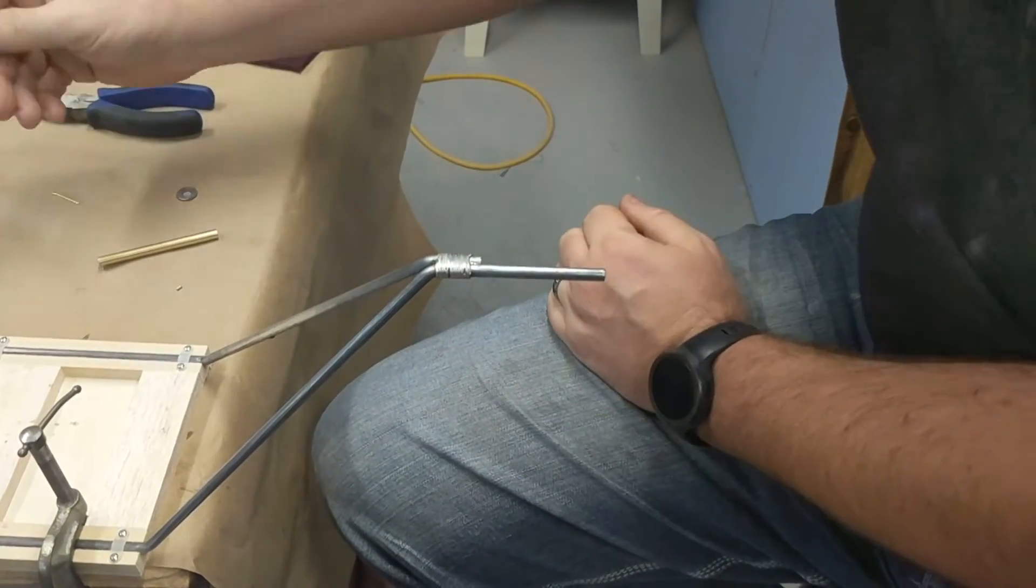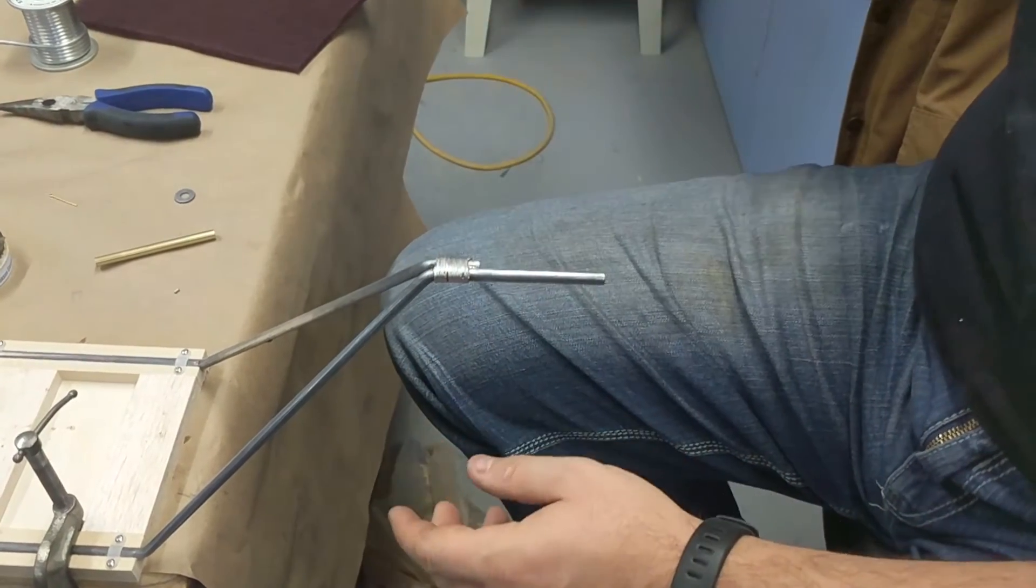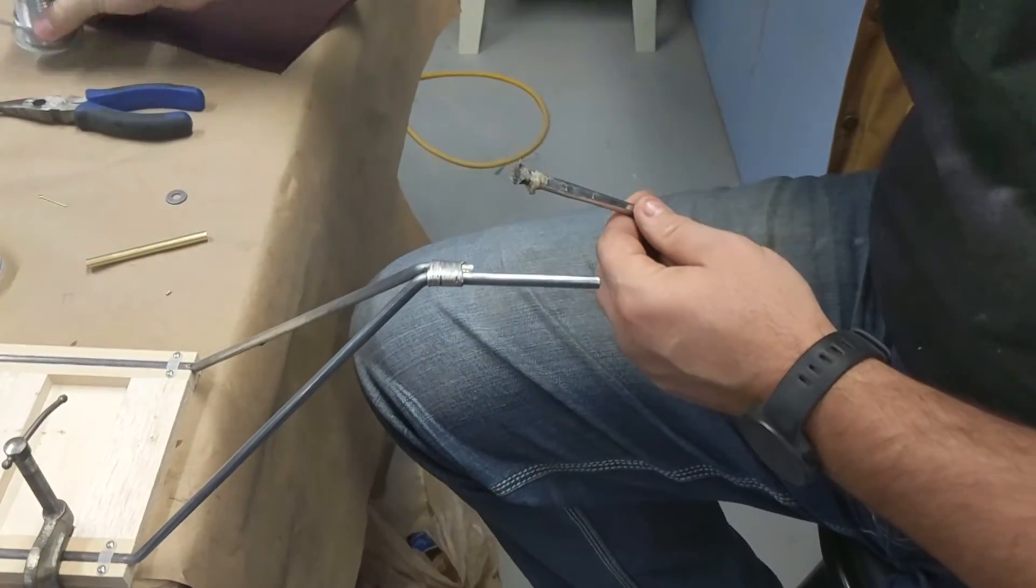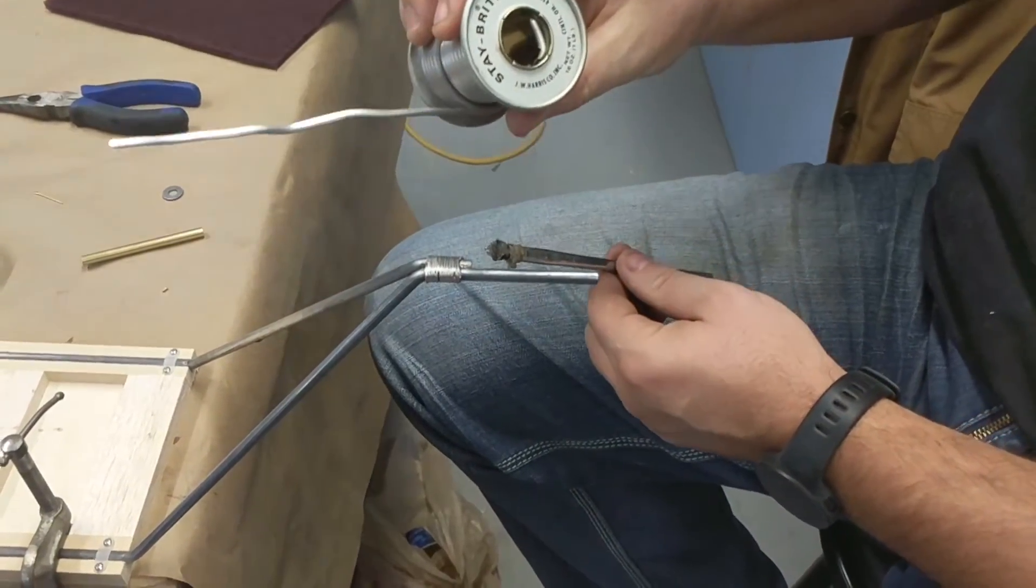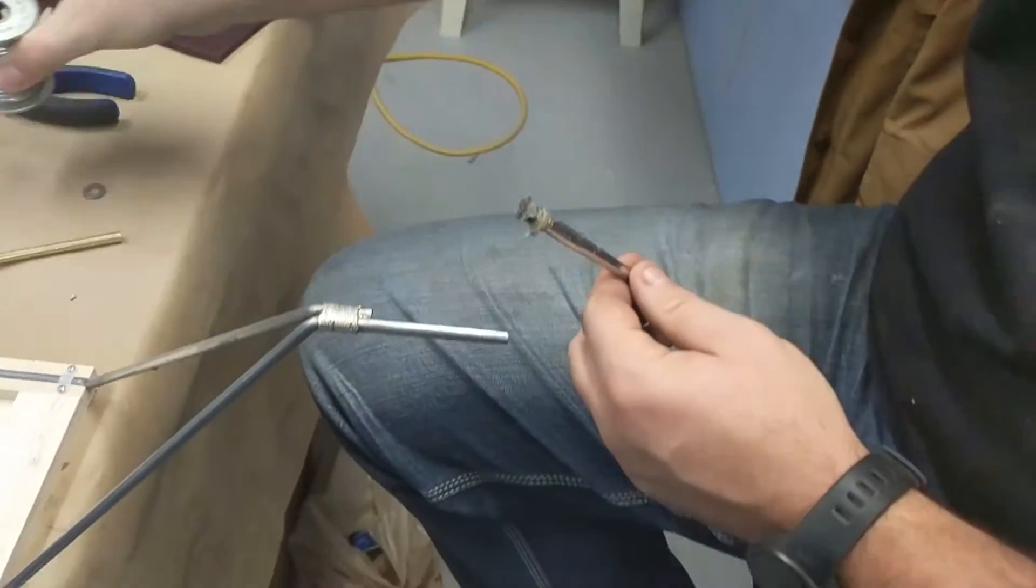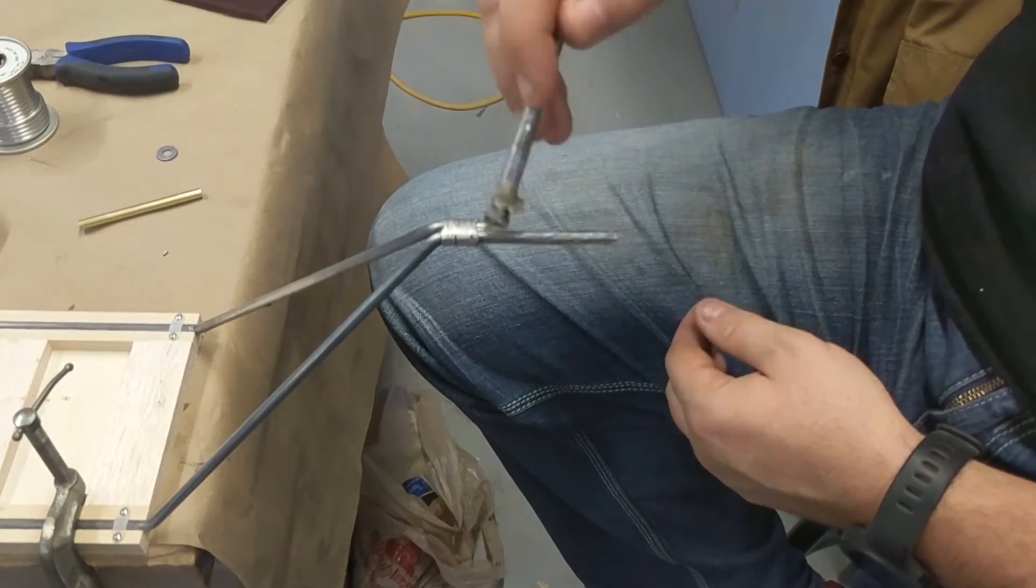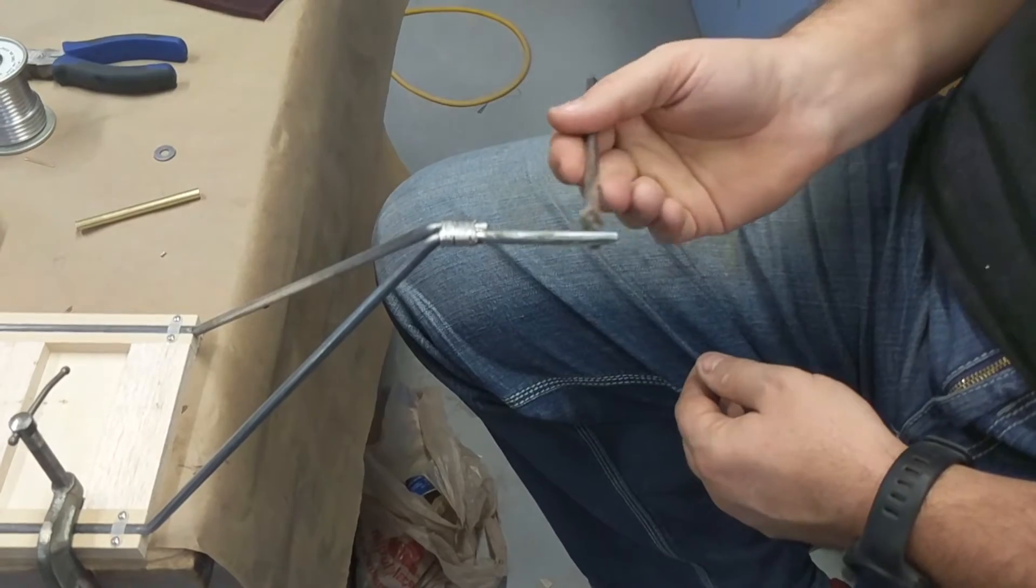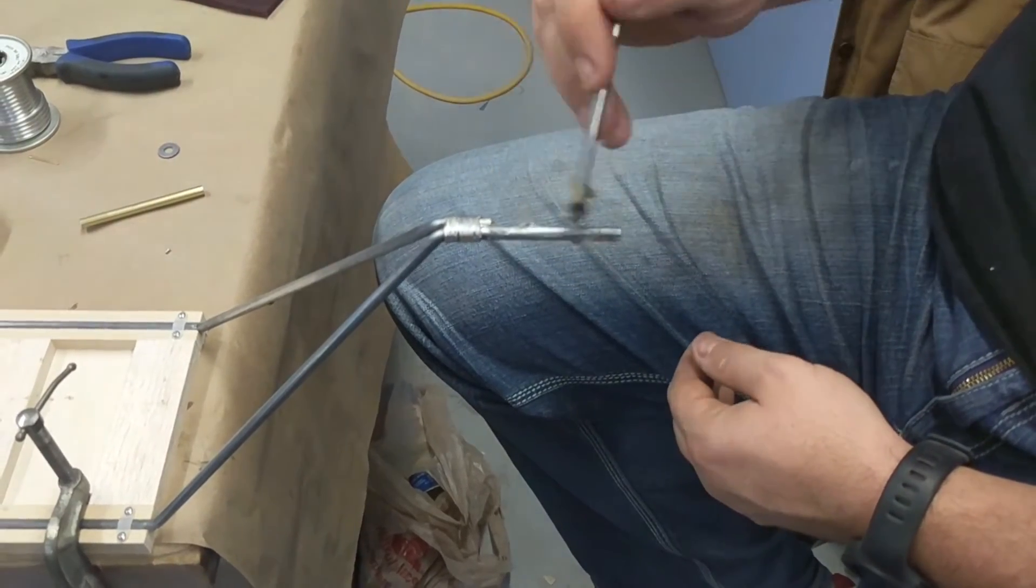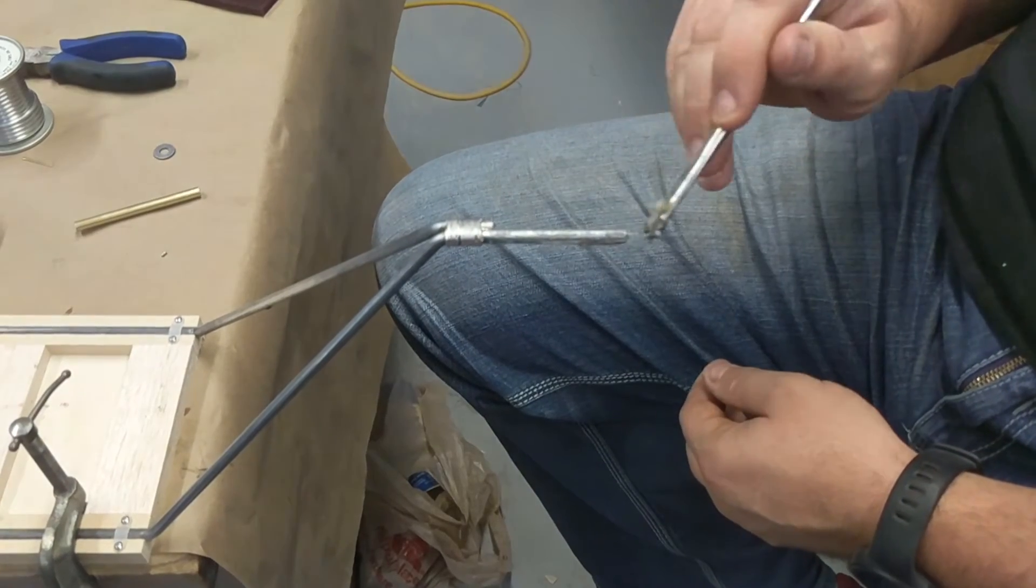So the first step is to take some of your flux, because I don't like to use flux core, rosin core solder. I like to use the stay bright silver solder without any kind of rosin or anything in it. And then we'll take and just brush that on, make sure you get it all covered with it. All the way around, get the end a little bit.